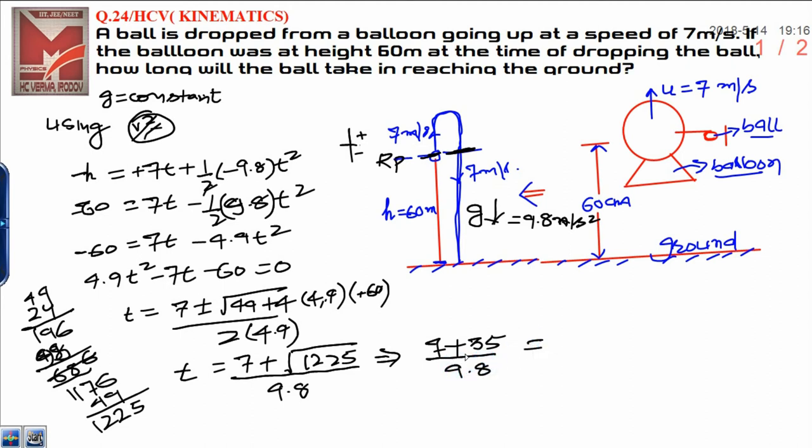Finally, it will be 35 plus 7, which is 42. 42 upon 9.8. Finally, we will write 420 upon 98. Now solve it.